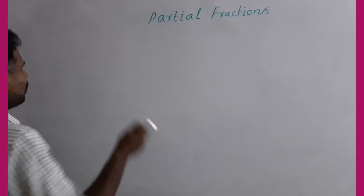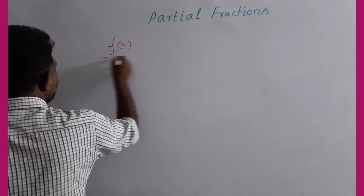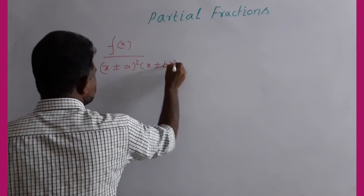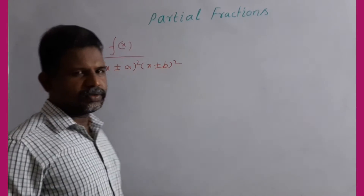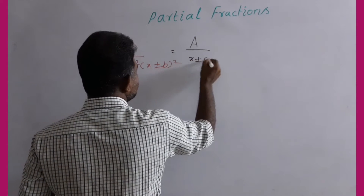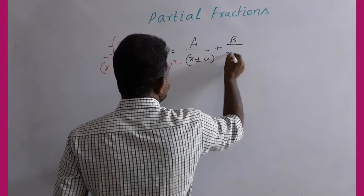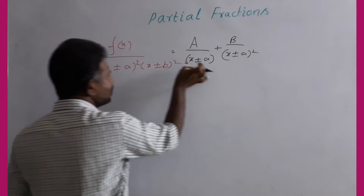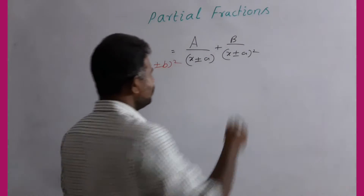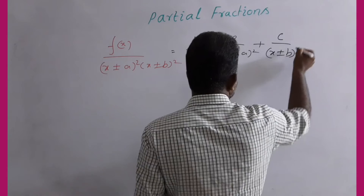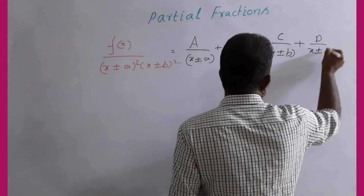The method is f(x) divided by (x + r − a)² times (x + r − b)². This gives us terms: A by (x + r − a), B by (x + r − a)², C by (x + r − b), and D by (x + r − b)².